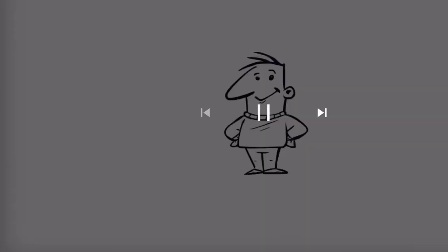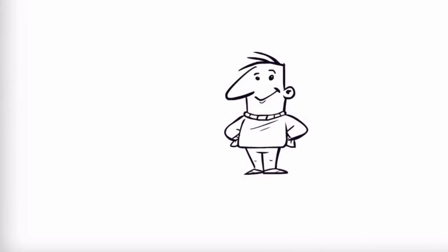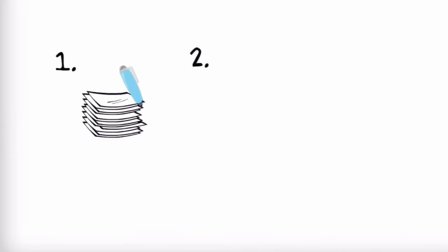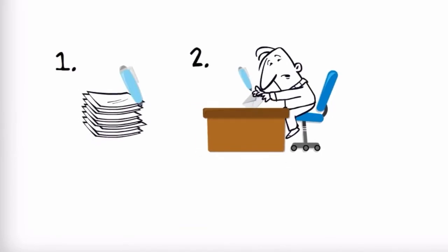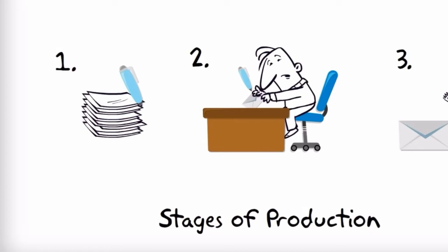Let's watch a brief video about cost flow in a manufacturing business that produces envelopes. To produce an envelope, you need paper and glue — take the paper, fold it, and apply glue. These three steps are the three stages of production, resulting in a finished product ready to sell.